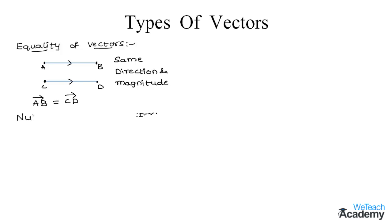And now let us learn about null vector, which is nothing but a zero vector. So let us consider a point A on the space.